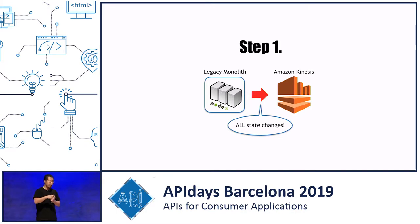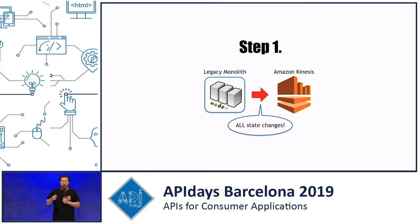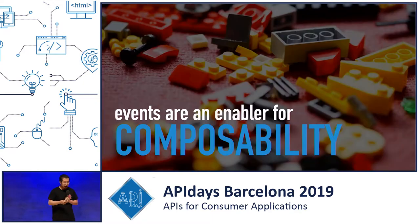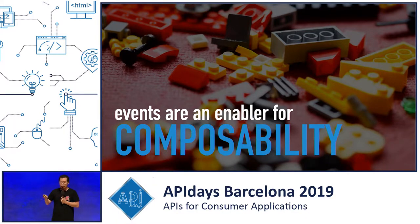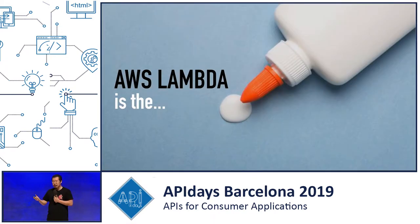The first and probably most important step we took was to make sure that our legacy monolithic system is publishing events for every single state change into a Kinesis stream — in this case actually several different streams — so that we can compose different features together using events. This is a great way to build a loosely coupled system, and Lambda becomes the glue that helps connect all these different parts together.